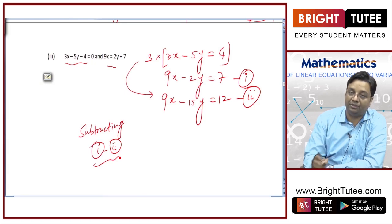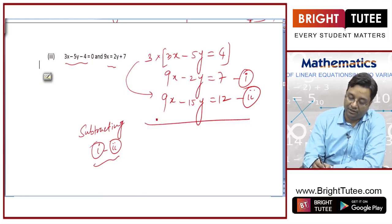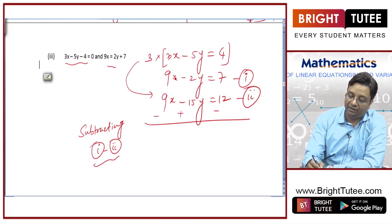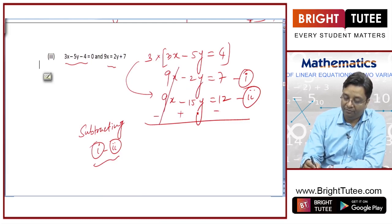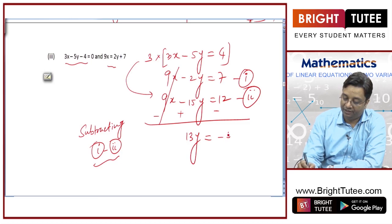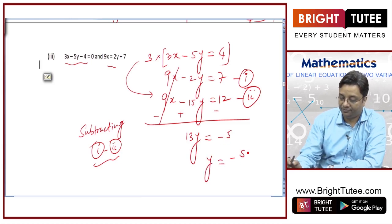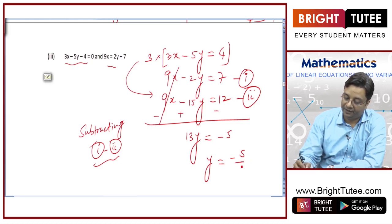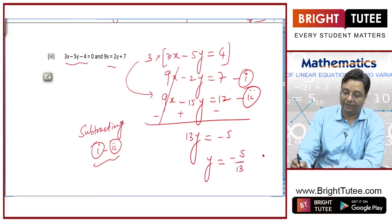This is just symbolic representation. So, subtracting equation 1 minus equation 2, changing the signs: minus, plus, minus. This will get cancelled. Minus 2y plus 15y is 13y, and 7 minus 12 is minus 5. So, y is equal to minus 5 by 13.